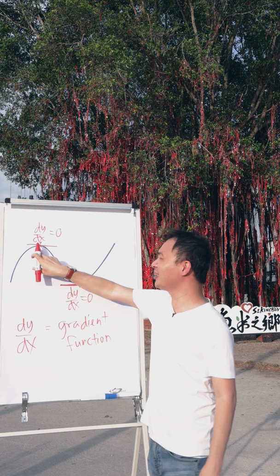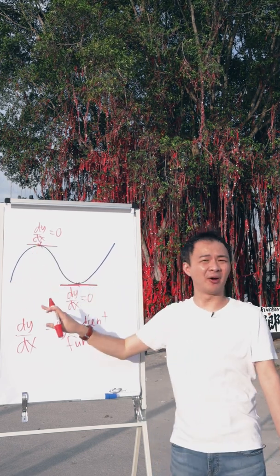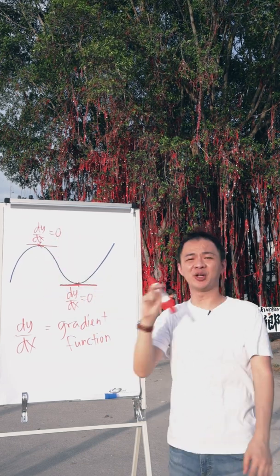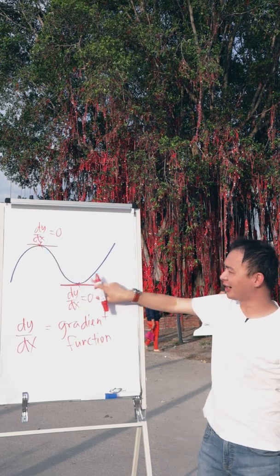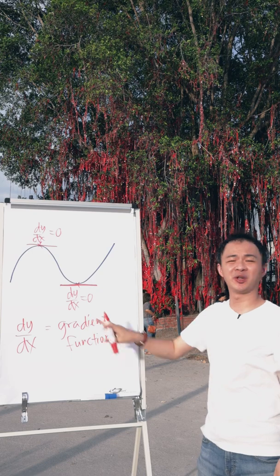This is the first thing you must know. When you see this, we call it a maximum point because you see the curve has a so-called turning point. And this turning point is called the maximum point, so dy/dx will equal to zero. Same idea when the curve goes to another turning point. This turning point we call the minimum point and dy/dx will equal to zero.